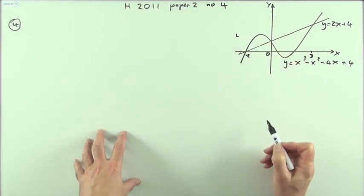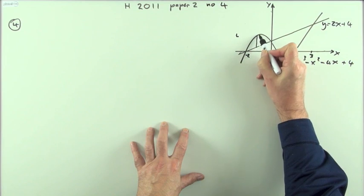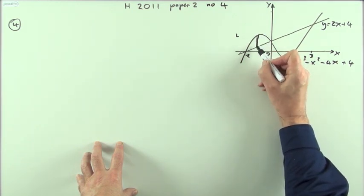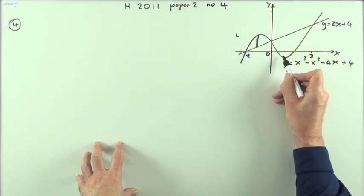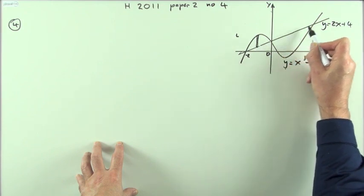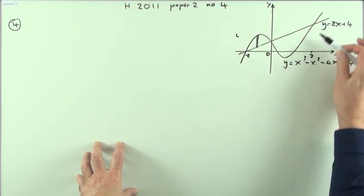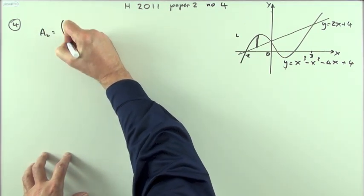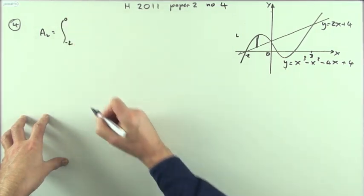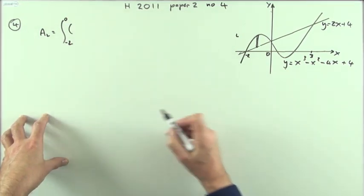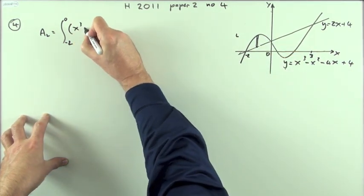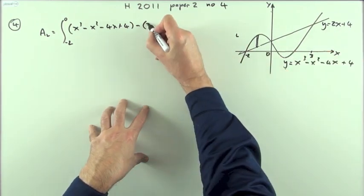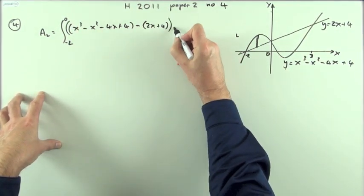Taking the one on the left first, the way you work out an area is by gathering up lots of little strips. These strips have width dx and height that's simply the difference in the y-coordinates. The y-coordinate of the top is given by this equation, the bottom by this equation. So the height of that strip is given by the difference, and the area of that strip is that multiplied by dx. Then you add them all up.